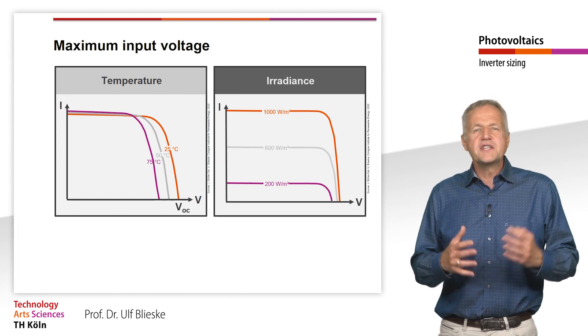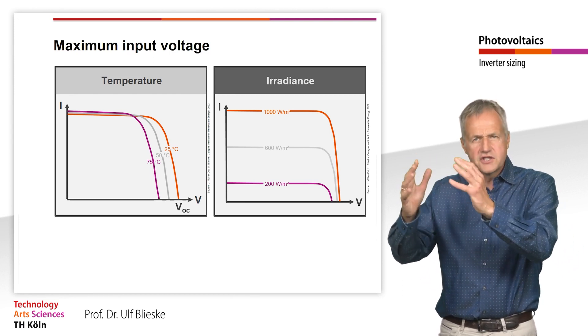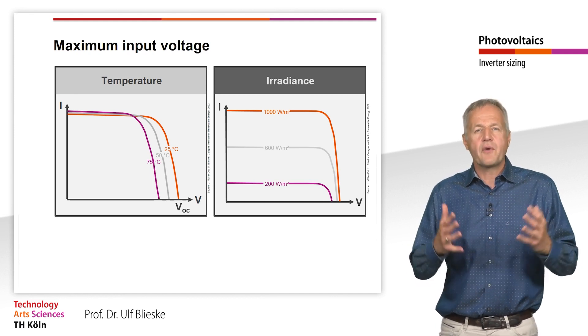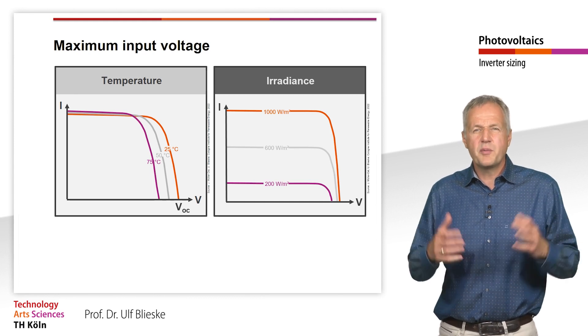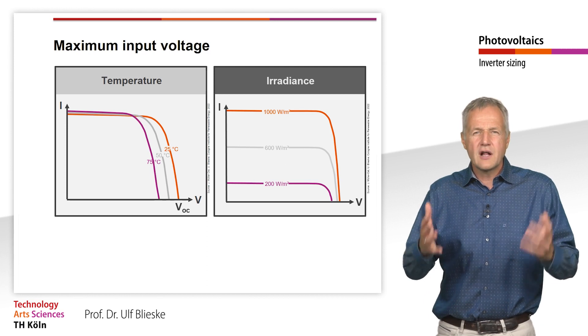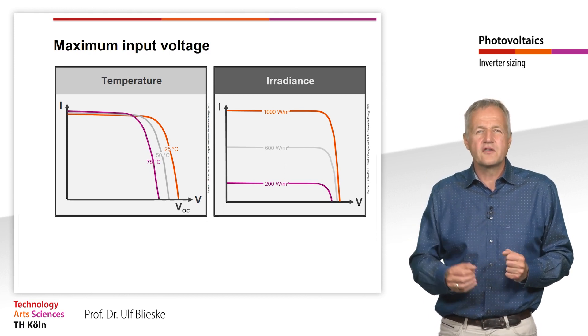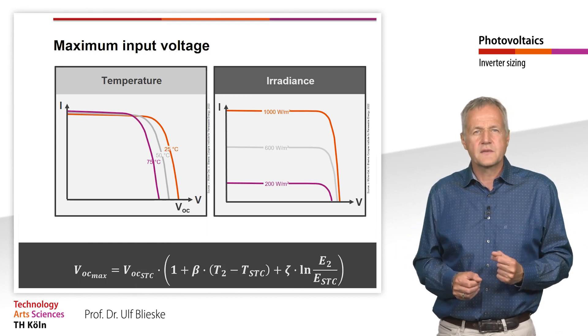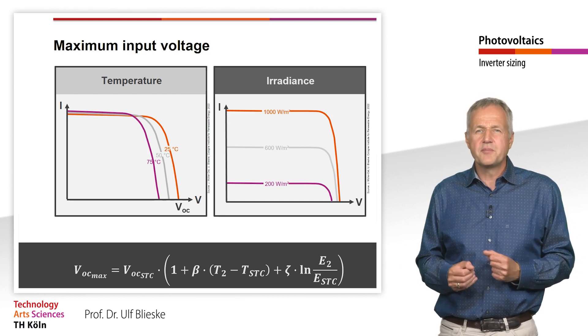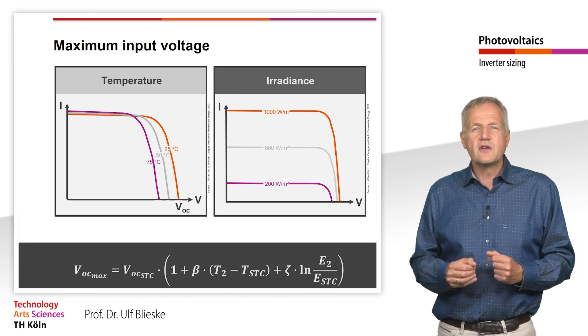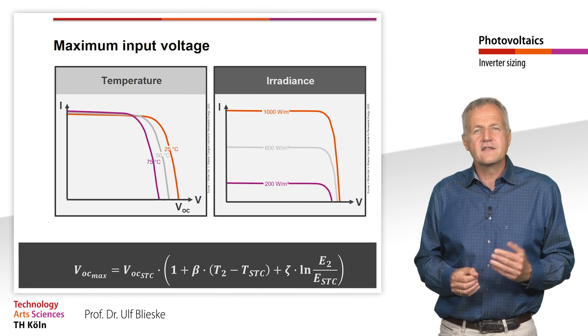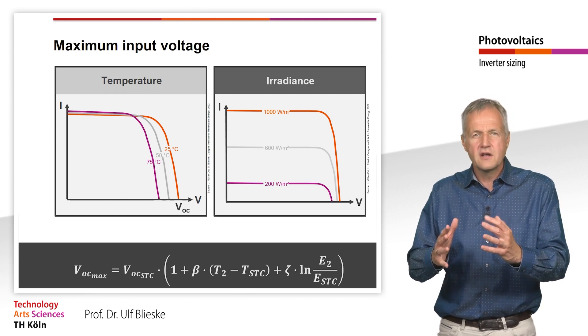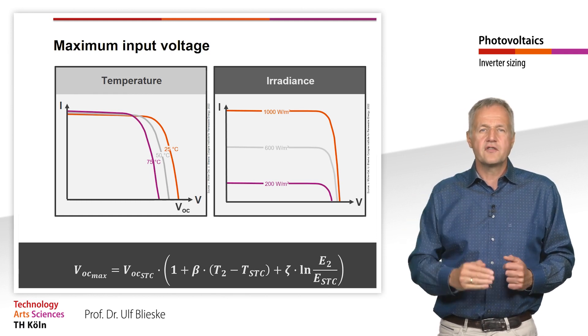The solar generator therefore reaches the maximum open circuit voltage during a power failure on a very cold, very sunny day around midday. The inverter must be prepared for this extreme case. To calculate the highest possible open circuit voltage we can use the equation which we have already learned in this context. But what is the coldest temperature and can the solar module even get the maximum irradiance at these extremely low temperatures?